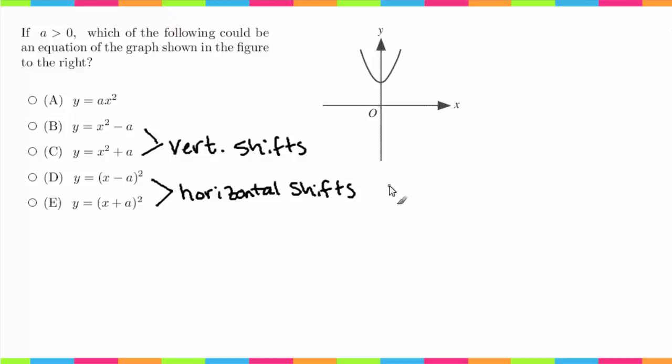But in this case, since the vertex is shifted up, it's going to be this one. So just a quick reminder: this is down, this is up, this is minus a right, and this is left.